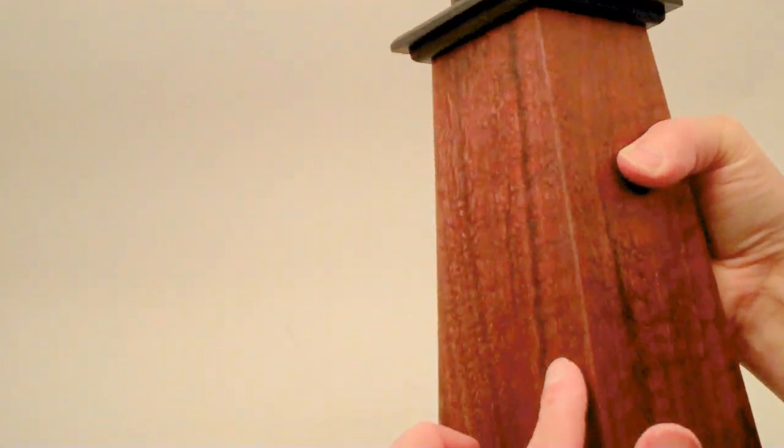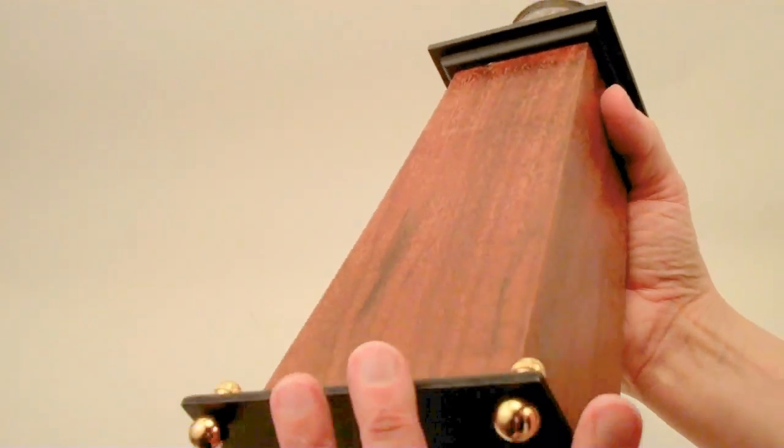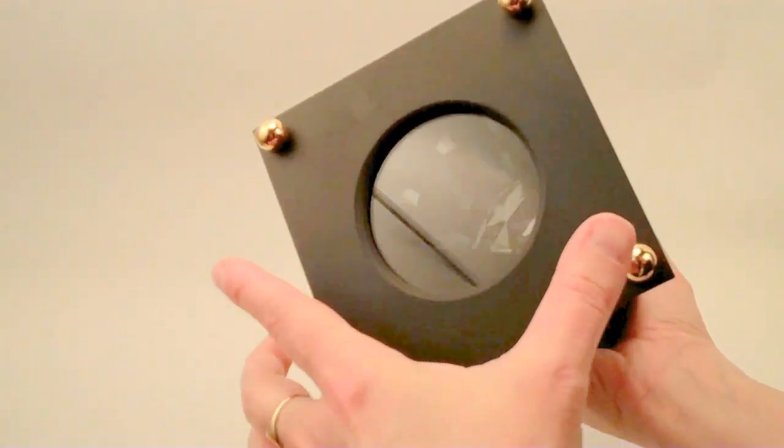The main barrel of the kaleidoscope is a four-sided Bubinga wood, and the eyepiece is here at the bottom that's very large.